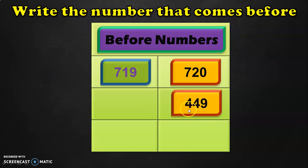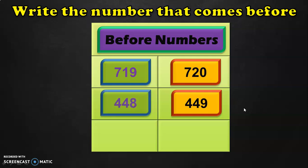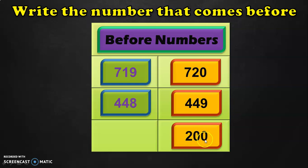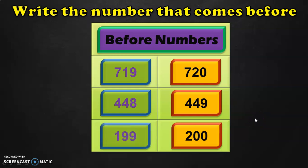The next number given is 449. The number before 449 is 448. The last number here is 200. What is the number before 200? It is 199.